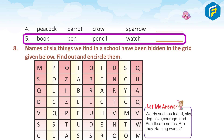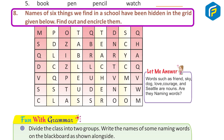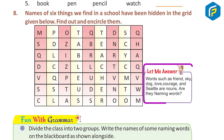Row: Book, Pen, Pencil, Watch — Answer: Thing. Exercise 8: Names of six things we find in a school have been hidden in the grid. Find and encircle them. Answer: Classroom, Students, Dance, Bench, Library, Teacher, Table.